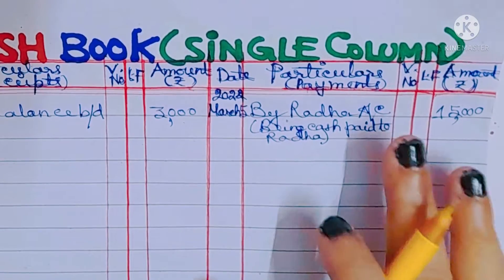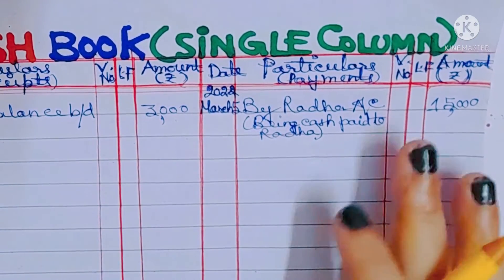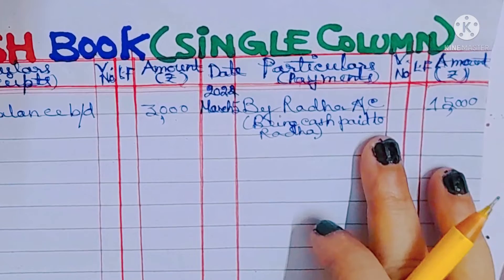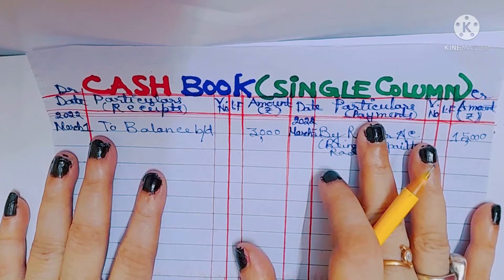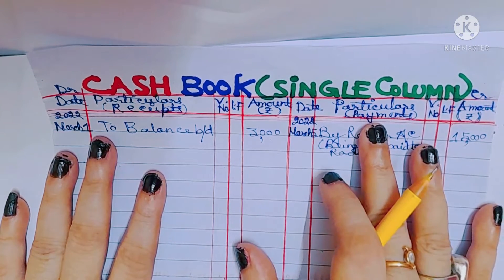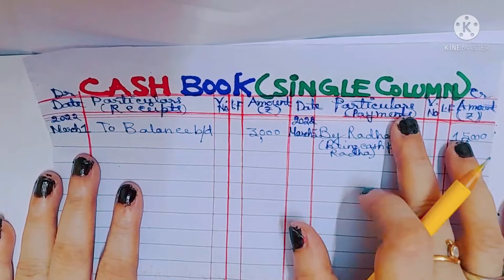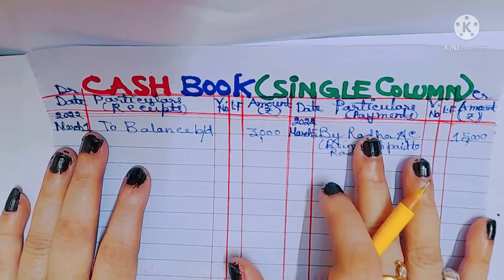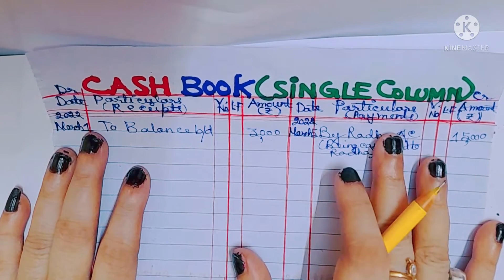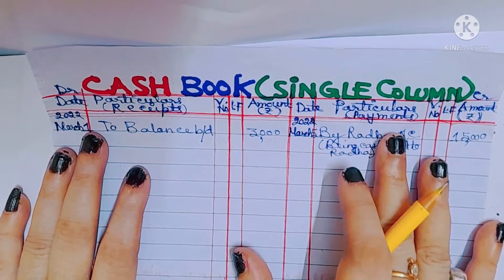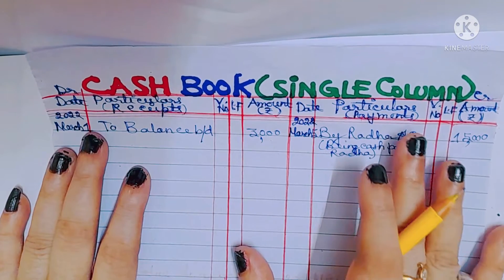Cash book is a real account. According to the real account rule, what goes out is credit. Here, when cash is paid to Radha, cash goes out from the business, so 15,000 will be credited. Please remember: cash book only records cash transactions. Cash receipts are recorded on the debit side and cash payments are recorded on the credit side. Single column cash book does not record checks received or checks paid, and also does not record cash discount allowed or cash discount received.